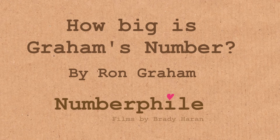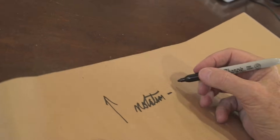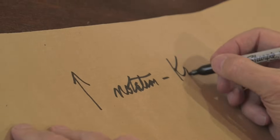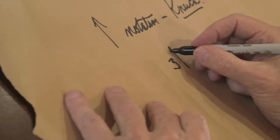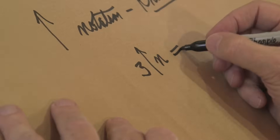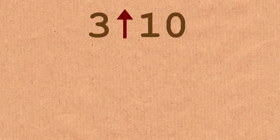Well, I can't really write it yet — I have to explain the notation. So-called arrow notation, often attributed to Don Knuth, computer scientist at Stanford, is very creative about notation. The notation is this: suppose you write three arrow n, that just stands for 3 to the power n. So 3 arrow 10 is 3 to the 10th power — that's a pretty big number. That's why you need arrows to write 3 to the n.